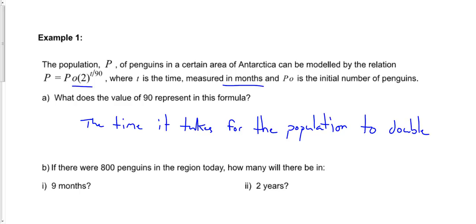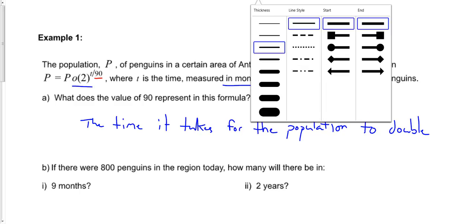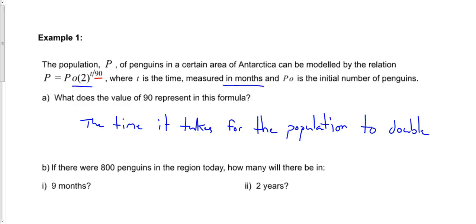So 90 is the amount of time, that is the doubling time. This piece right here tells you what the doubling time is. So 90 is the doubling time of this particular population of penguins.